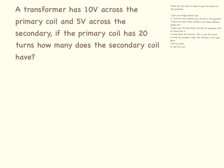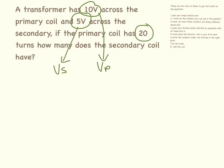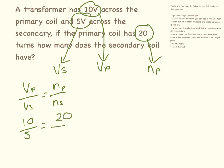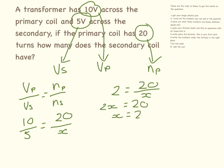So here instead of it being pictorial, it's in words. We circle all of our numbers. The transformer has 10 volts across the primary coil, so that is Vp. 5 volts across the secondary coil, that is Vs. And the primary coil has 20 turns, so that is Np. So Vp divided by Vs equals Np divided by Ns, which gives us 10 divided by 5 equals 20 divided by something. So we have 2 equals 20 divided by x. Rearranging: 2x equals 20, so x equals 10 turns.